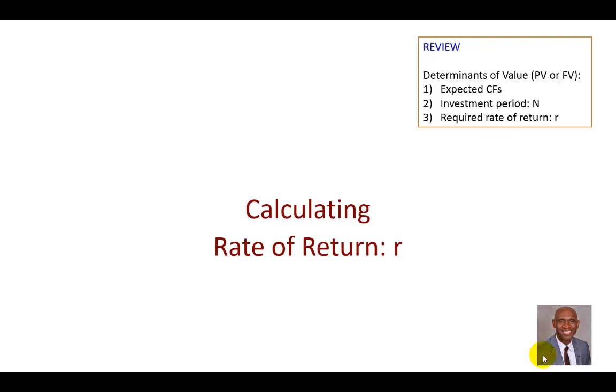As a quick review, remember we said that the determinants of value include the expected cash flows from an investment, the period of investment, and finally the required rate of return. And sometimes, given value in the form of either present value or future value, we're able to calculate expected cash flows, typically annuity payments, or investment period, and now I'm about to show the required rate of return.